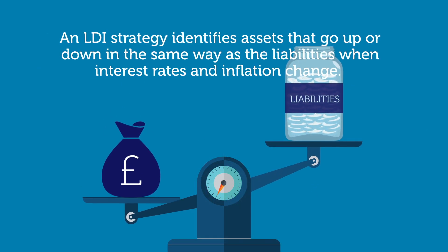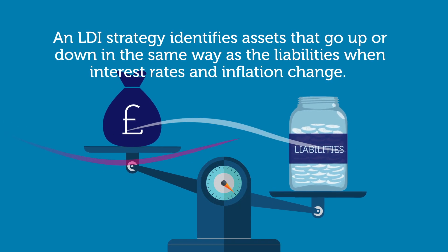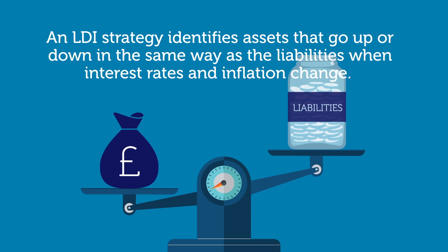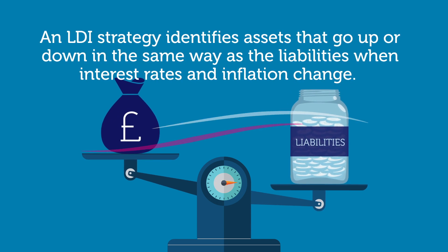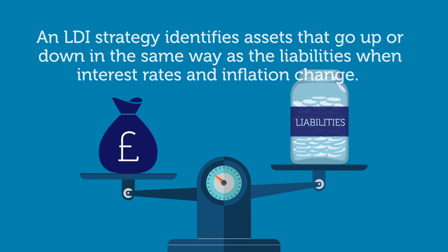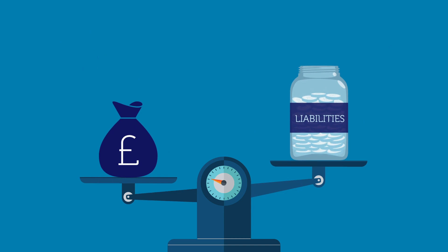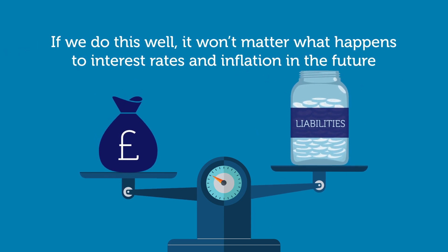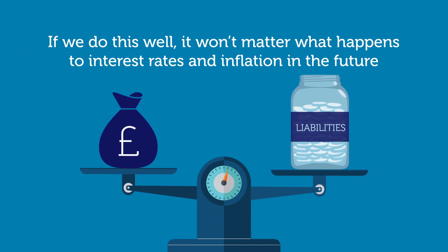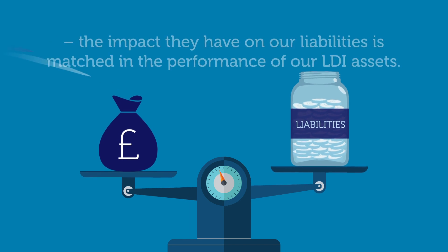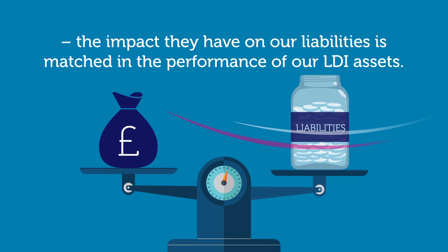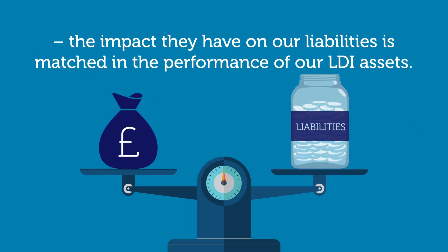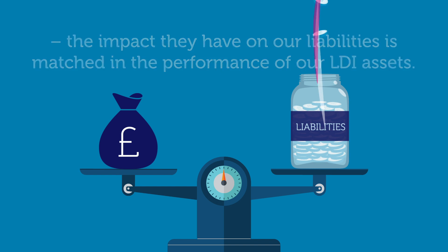An LDI strategy identifies assets that go up or down in the same way as the liabilities when interest rates and inflation change. If we do this well, it won't matter what happens to interest rates and inflation in the future — the impact they have on our liabilities is matched in the performance of our LDI assets.